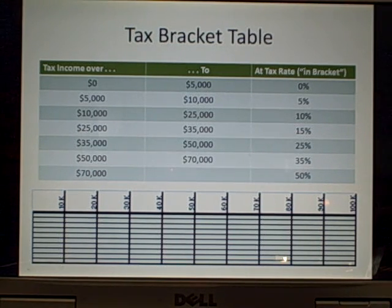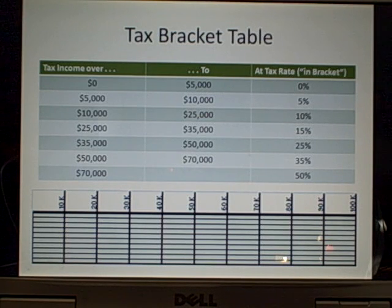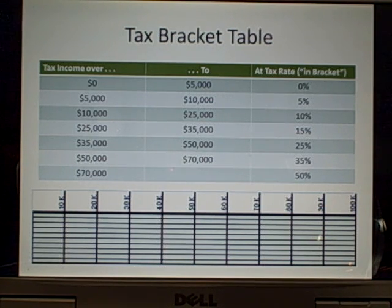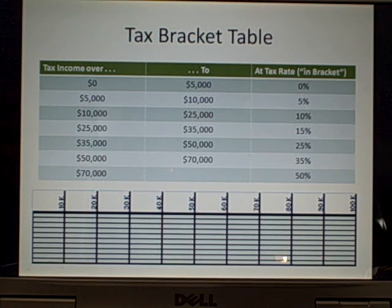All of us pay nothing on the first dollar earned. In this table, everybody pays nothing on the first five thousand — you, me, Bill Gates, Warren Buffett: zero. Suppose you receive all of your income in cash dollars and you bind them up into bunches of a thousand dollars, then stack these bunches one on top of the other. On top of each one you mark the bracket they fall into. The table on the bottom is going to be our stack of bills.